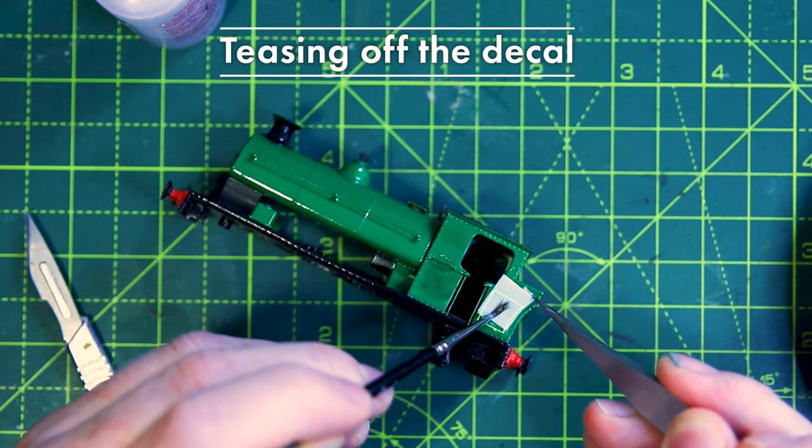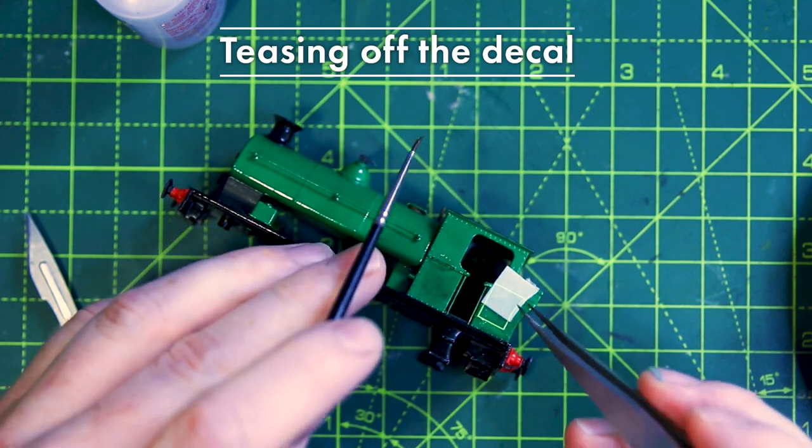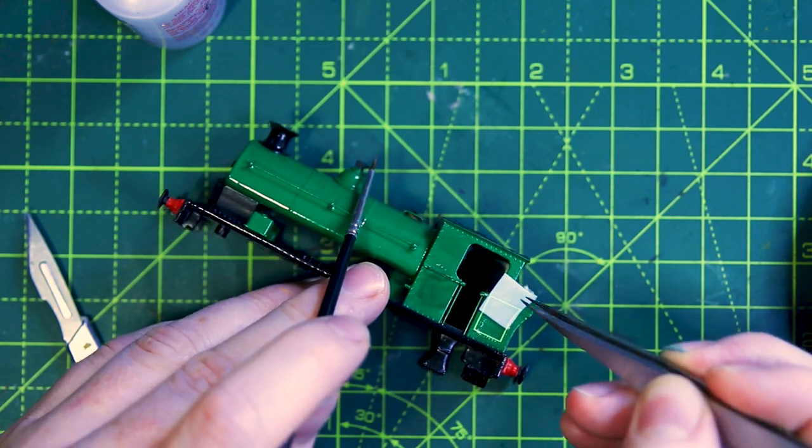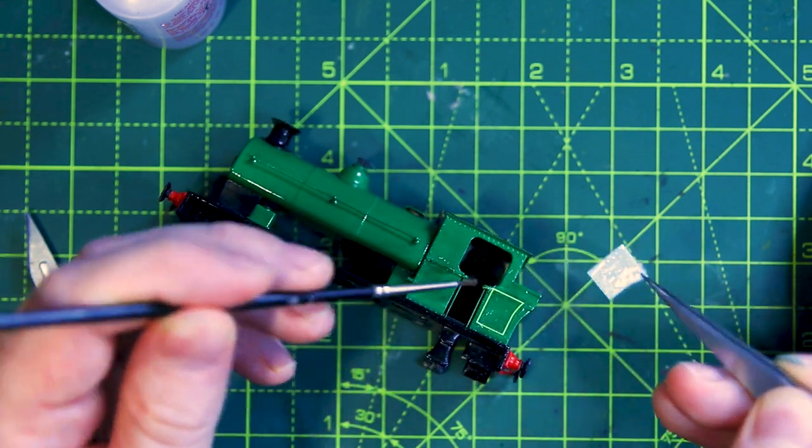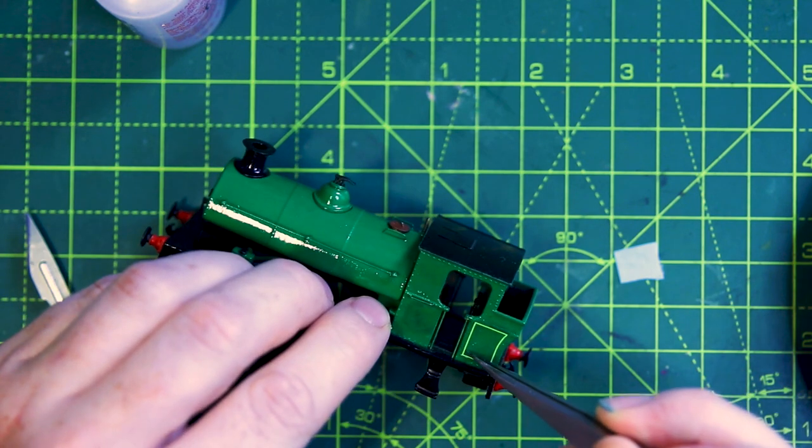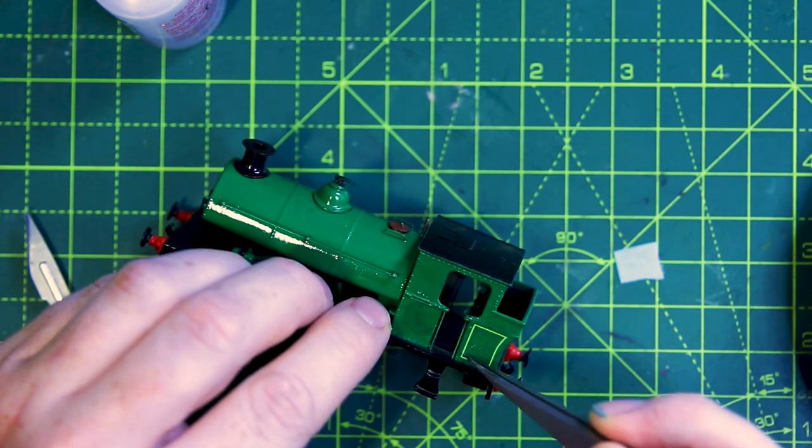Here you can see what I mean by the transfer being one piece, including the centre section. Now you could cut this out, but I wanted to see if I could keep it to avoid the transfer getting too tangled while I was putting it on. This is where the microsole comes in handy.